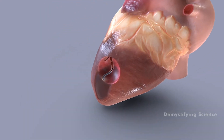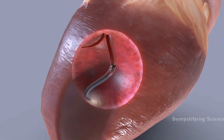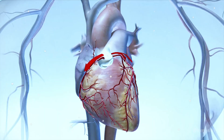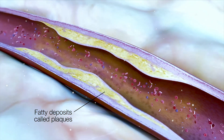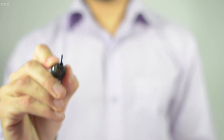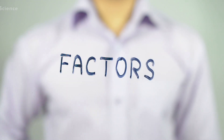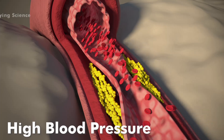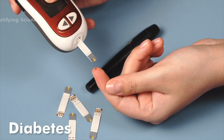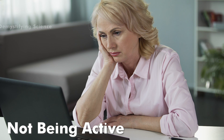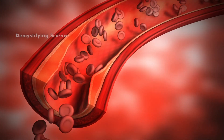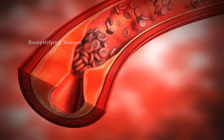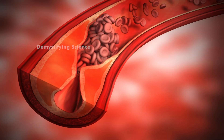Let us see how plaque builds up in the arteries. Healthy coronary arteries are smooth and elastic. Coronary artery disease is thought to begin with damage or injury to the inner layer of your coronary artery. The damage may be caused by various factors like smoking, high blood pressure, high cholesterol, diabetes, aging, and not being active. Because of these risk factors, coronary artery disease starts by the build-up of fat, causing minor damage to your blood vessel walls.